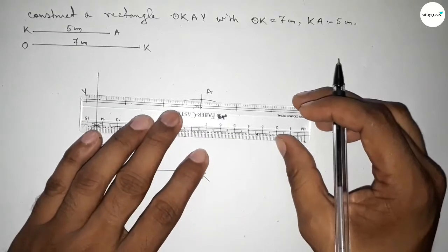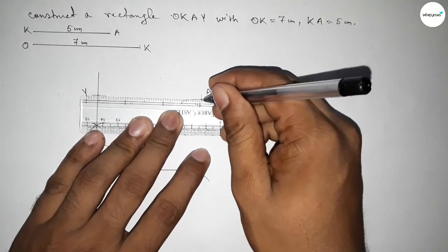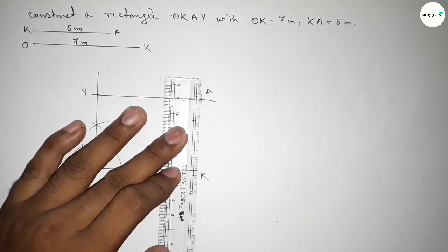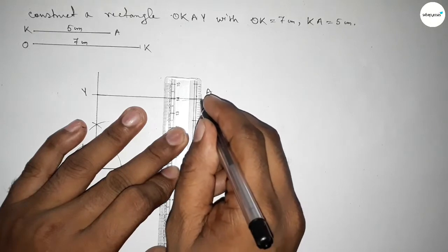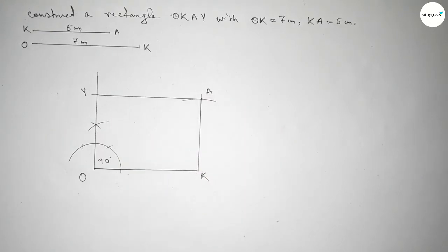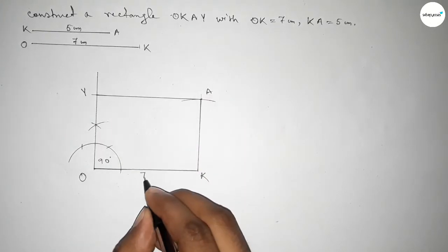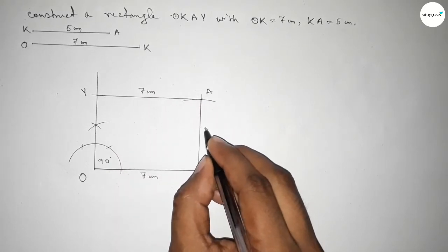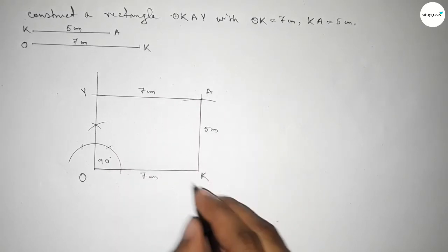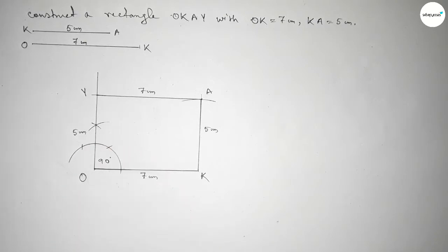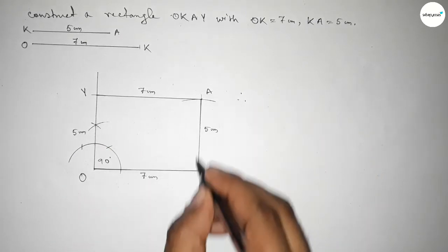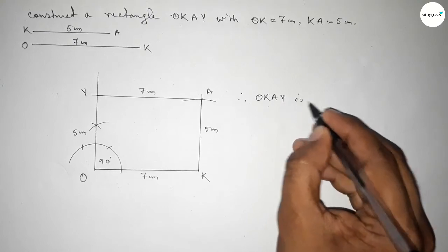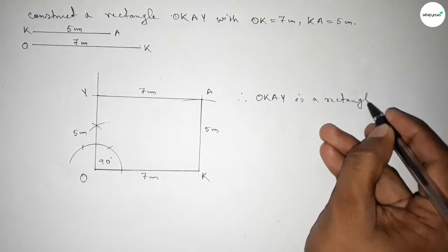Taking point Y here and point A here. Joining first Y and A, then joining K and A. This side is 7 centimeters and this is equal to 7 centimeters. This side is 5 centimeters and this is equal to 5 centimeters. Therefore, rectangle OKAY is constructed.